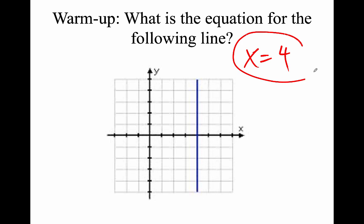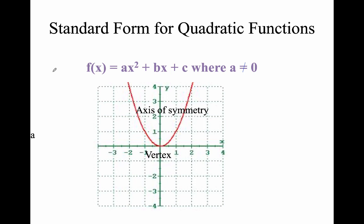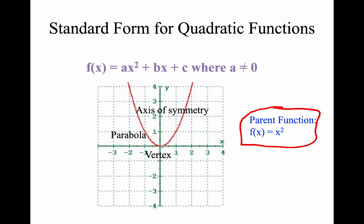Vertical lines: x equals a number — for example, x equals 4. This is going to be for our axis of symmetry on our graph. Standard form of a quadratic equation — this is the parent function — is y equals x squared. The standard form is ax squared plus bx plus c, and we're going to be graphing these.